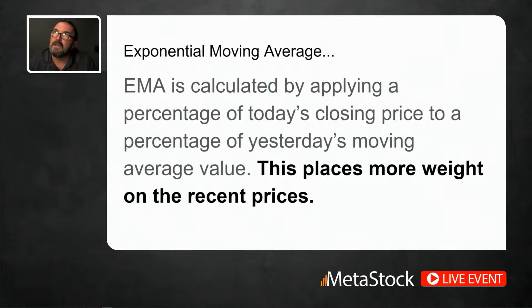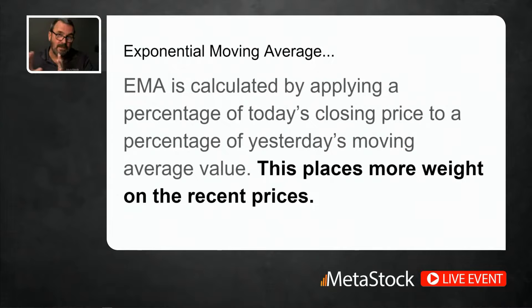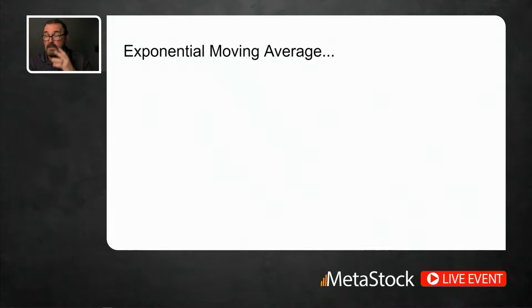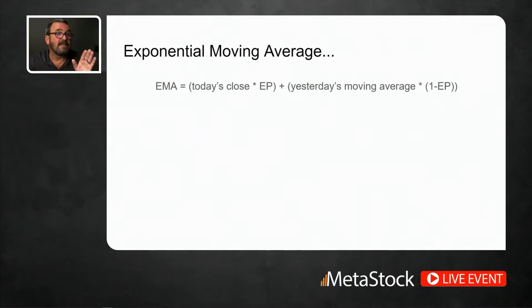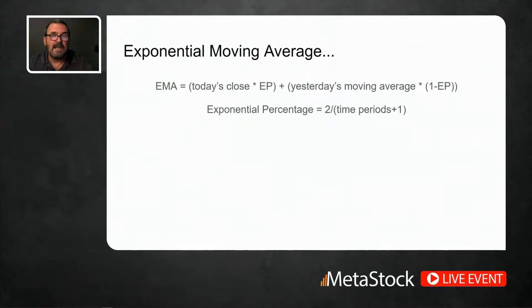Now we'll talk about the exponential moving average. When I watch presentations it seems like the EMA is referred to more than the SMA, but they're both very common. The exponential moving average is calculated by applying a percentage of today's closing price to a percentage of yesterday's moving average value — this places more weight on recent prices. The formula is: EMA = today's price × EP + yesterday's EMA × (1 − EP), where EP is the exponential percentage. This is exactly how MetaStock calculates it by default.